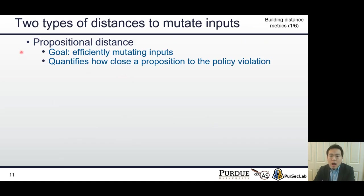The next step is that we need to build our own distance metrics. There are two types of distance: propositional and global distance. First, propositional distance is for mutating inputs. This distance represents how close the RV's current state is to a policy violation.